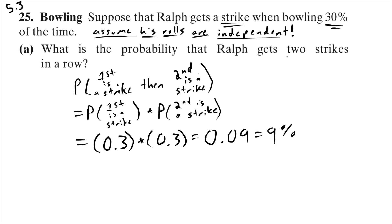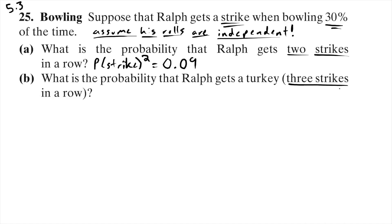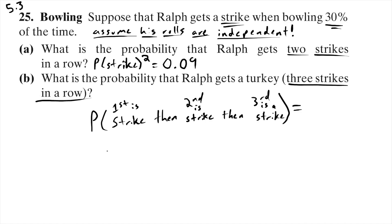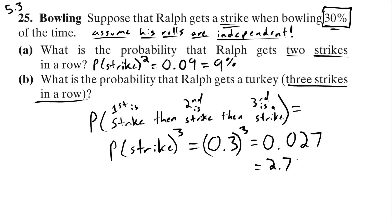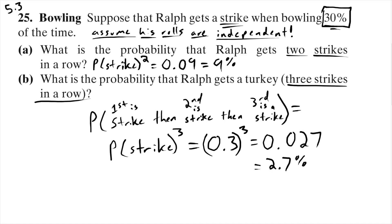The probability of two strikes in a row is just multiplying their individual probabilities together, which is 9%. For three strikes in a row, it's the probability of a strike cubed, which is 2.7%. Using the multiplication rule, the probability keeps going down as we want more strikes in a row. Ralph has a 30% chance for one strike, 9% for two in a row, and less than 3% for three in a row.